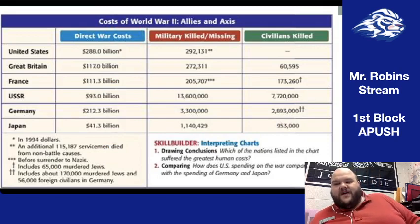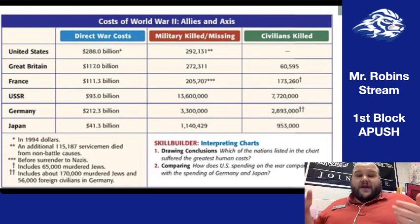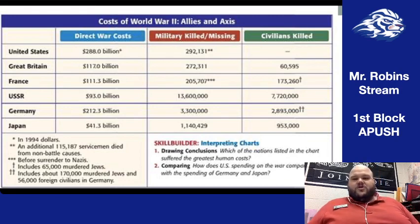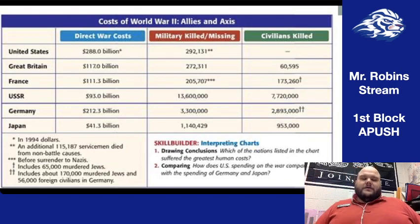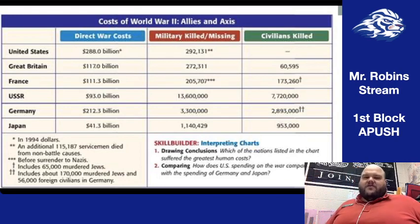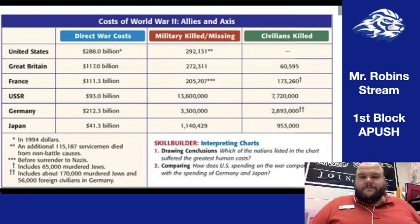Both sides had their sacrifices, just very different in terms of the cost of the war. We spent more money on the war than anyone else, fighting in both Europe and the Pacific. But when you look at the numbers: just shy of 300,000 American military killed or missing — making it the most deadly war outside of the Civil War. Compare that to 13.6 million Soviet soldiers and 8 million civilians killed, whereas we don't really have any civilians dying in the war.